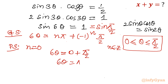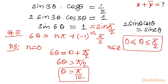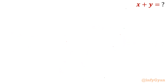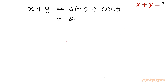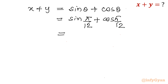Putting n equals 0 gives 6-theta equals 0 plus pi over 2, so 6-theta equals pi over 2. Dividing both sides by 6, theta equals pi over 12. Now, with theta equal to pi over 12, we evaluate x plus y. Using our substitution x equals sin theta and y equals cos theta, we write x plus y equals sin(pi over 12) plus cos(pi over 12), which in degrees is sin 15 degrees plus cos 15 degrees.